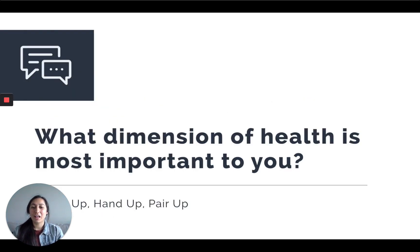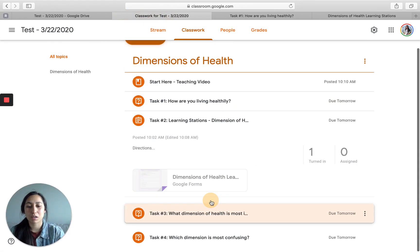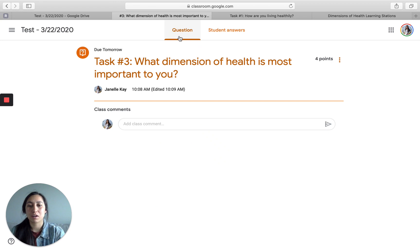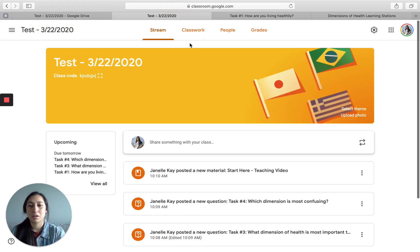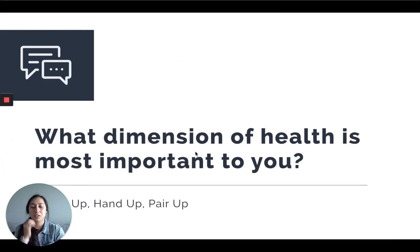Let's come and chat about the activity you just did. What dimension of health is most important to you? You've looked through the different dimensions now and each of them is very important, but not everyone will feel the same about all of them. Think about which one is most important in your life, then go to your Google Classroom and answer that question. You can also respond to your classmates and, if you're online at the same time, have a bit of back and forth.